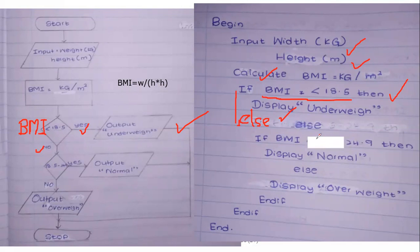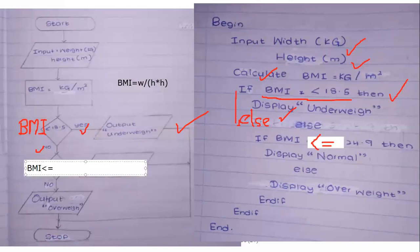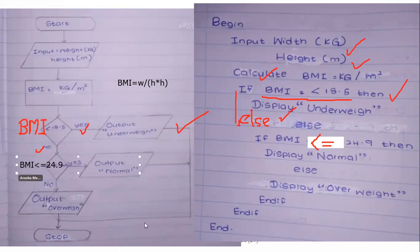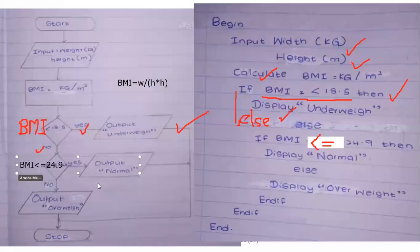If BMI satisfies a condition, for example the condition of BMI is checked for each category. There are many categories.